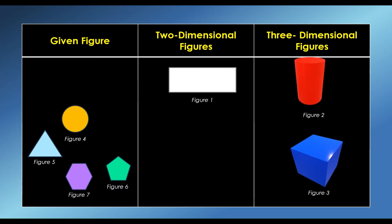For figure 3 we have a cube. A cube is defined as a three-dimensional square with six equal sides.